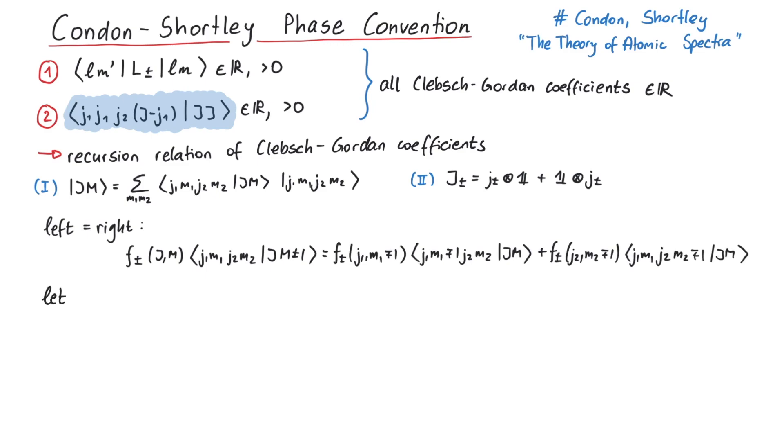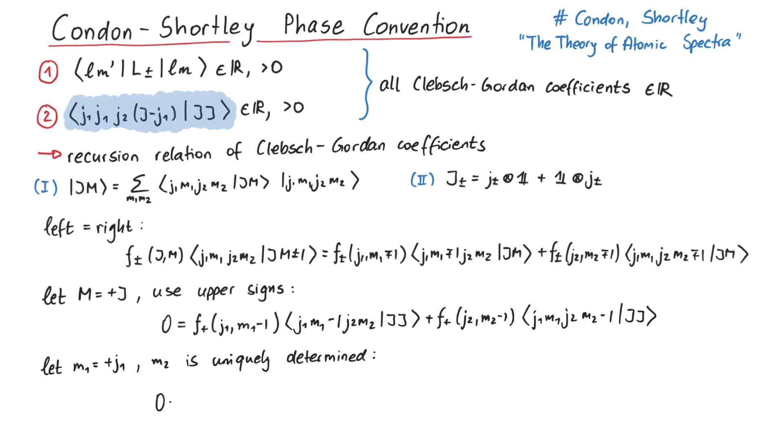Next we let uppercase m be equal to plus j and use the upper sign with all of the plus-minus signs we have, which makes the coefficient on the left vanish. Finally, we take m1 to be equal to plus j1, such that we can write every expression just in terms of j1, j2, and uppercase J.